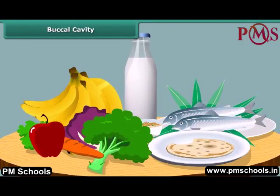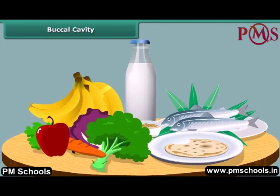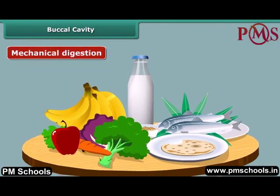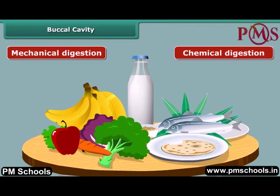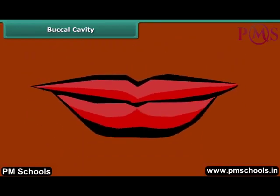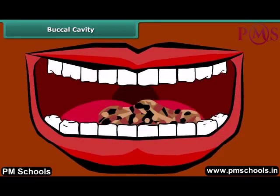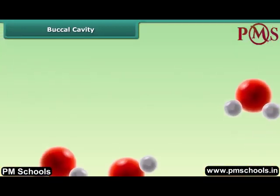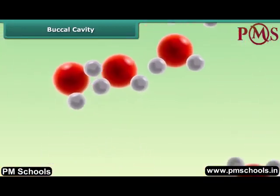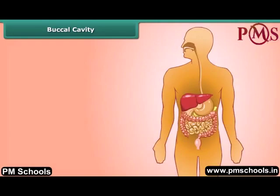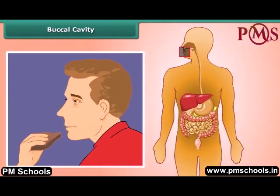Breaking down of food occurs by two ways: mechanical digestion and chemical digestion. Mechanical digestion is the physical breaking down of food when we chew the food with the teeth. Chemical digestion is the chemical breakdown of food into molecules the body can absorb. Both types of digestion take place in the mouth.